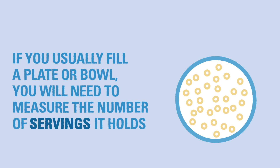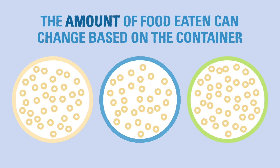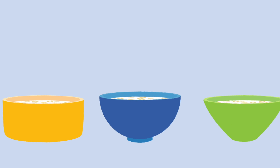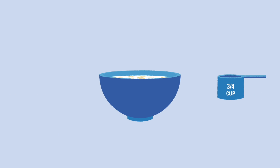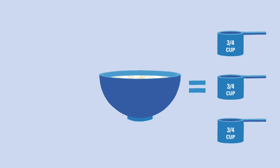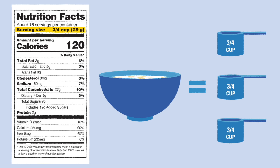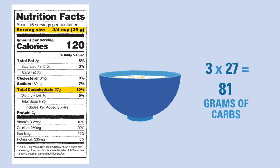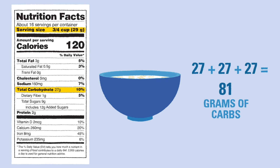For example, if you usually fill a bowl of cereal instead of measuring out a three-quarters cup serving, you will need to measure to find the number of servings in the bowl. Keep in mind the amount of cereal that gets eaten could change if you use different bowls every time. If you pour the cereal into a measuring cup and use that to fill the bowl, and find it equals three servings, and the nutrition facts label says each serving has 27 grams of carbs, then the bowl would have 3 times 27, which equals 81 grams of carbohydrate.